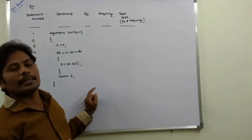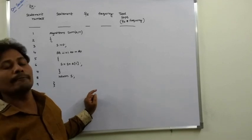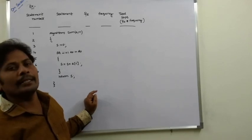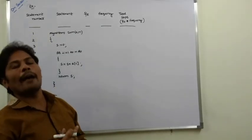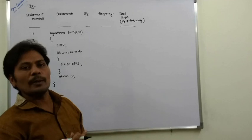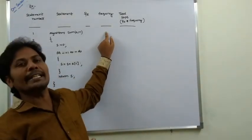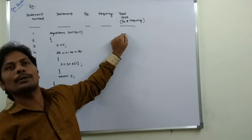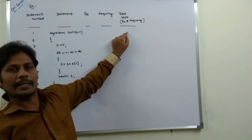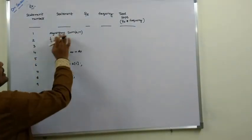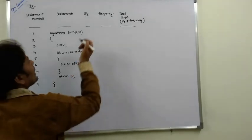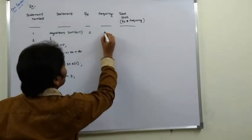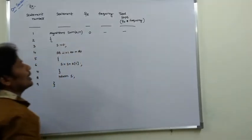S/E defines whether it is a valid statement or not — if valid, its value is 1; if not valid, its value is 0. Frequency means how many times each instruction is executed. Total steps equals S/E multiplied by frequency. For the algorithm header and braces, these are not valid statements, so S/E = 0, frequency = 0, total steps = 0.